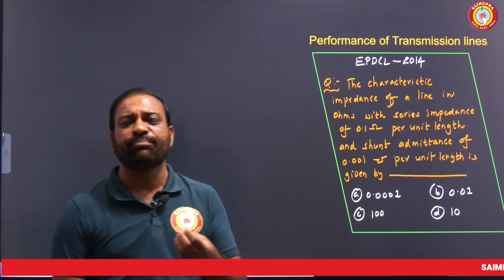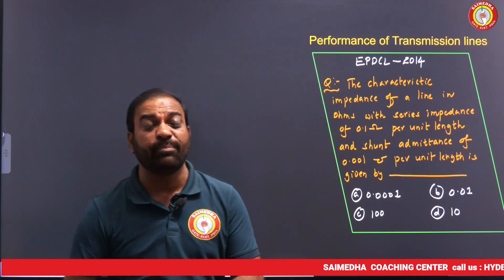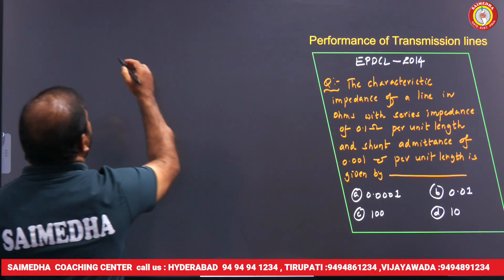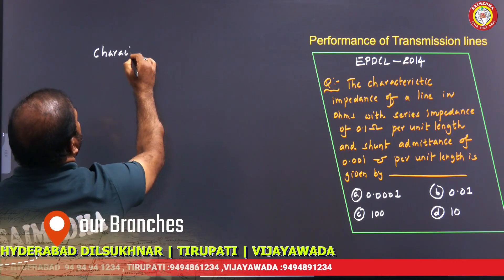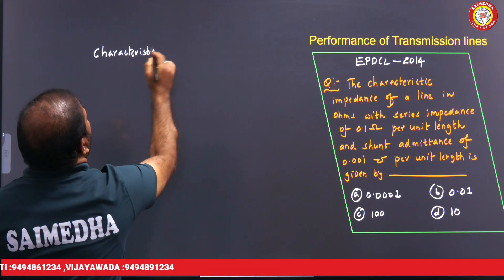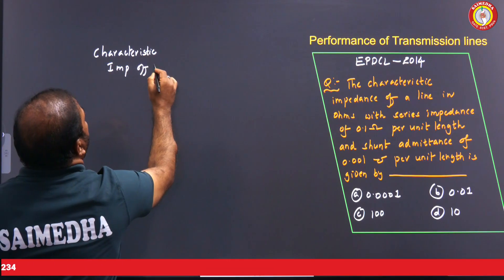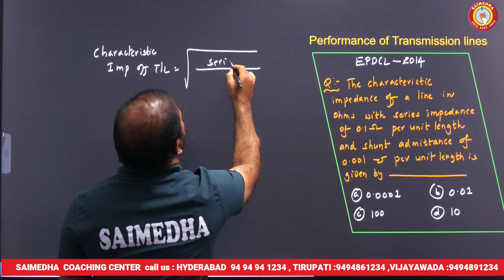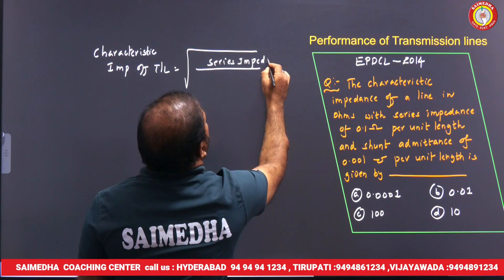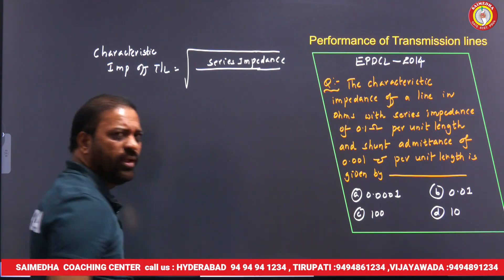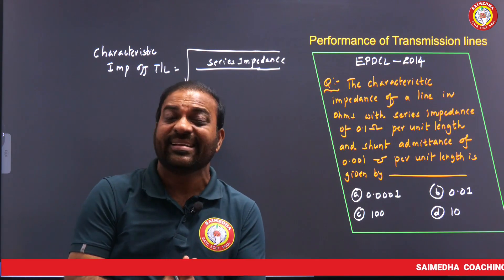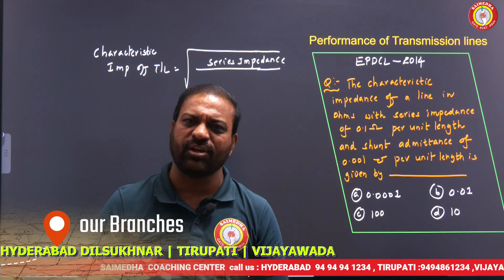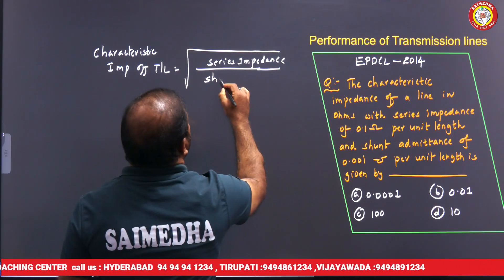Question number one: the characteristic impedance of a line in ohms, with series impedance of 0.1 ohm per unit length and shunt admittance of 0.001 ohm per unit length. The series impedance and shunt admittance are both given per unit length. We need to find the characteristic impedance.